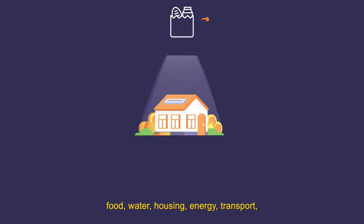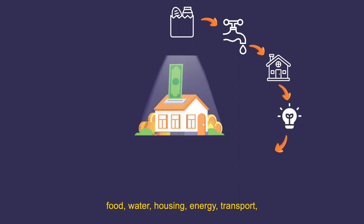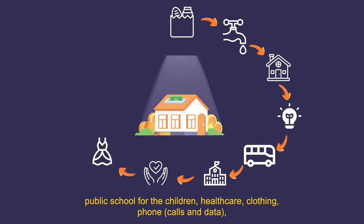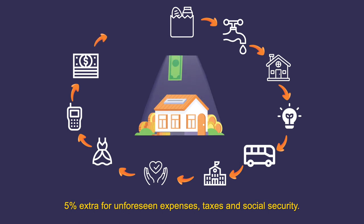Food, water, housing, energy, transport, public school for the children, healthcare, clothing, phone calls and data, 5% unforeseen extra, and taxes and social security.